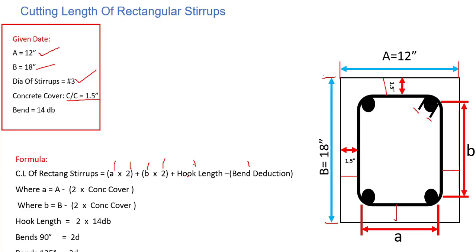Next we have hook length, which is 14 db. Then we minus the bend deduction. How many bends do we have? We have 90 degree bends and 135 degree bends. For 90 degrees, we have 1, 2, and 3 bends. And for 135 degrees, we have 2 bends.